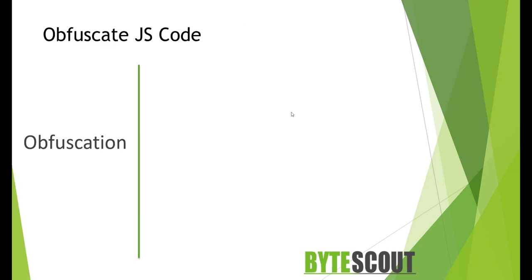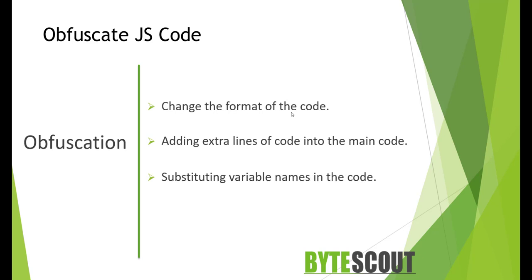There are some techniques which are used to obfuscate JavaScript like obfuscating the format of the code, adding extra lines of code into the main code, substituting variable names in the code, and the last one is obfuscating the code itself.